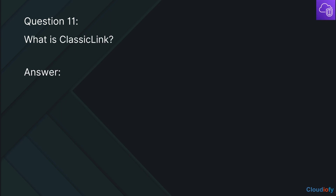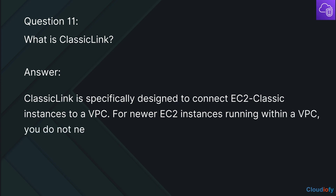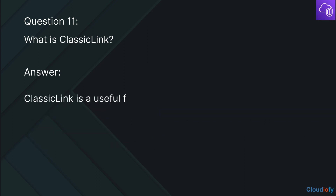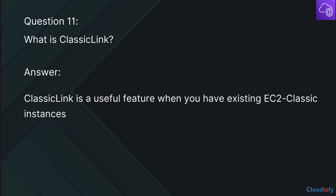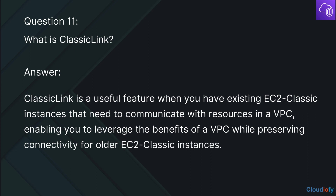The next question is: What is ClassicLink? ClassicLink is specifically designed to connect EC2 Classic instances to a VPC. For newer EC2 instances running within a VPC, you do not need to use ClassicLink as they are already integrated into the VPC networking environment. ClassicLink is a useful feature when you have existing EC2 Classic instances that need to communicate with resources in a VPC, enabling you to leverage the benefits of a VPC while preserving connectivity for older EC2 Classic instances.